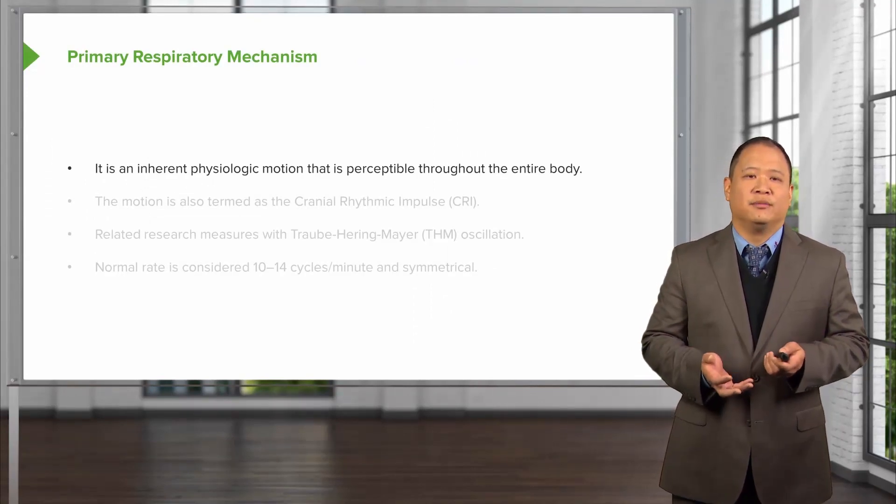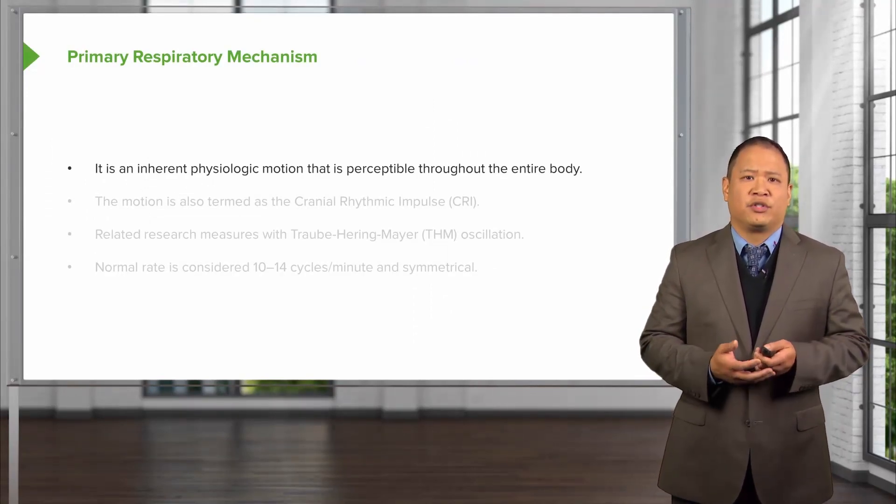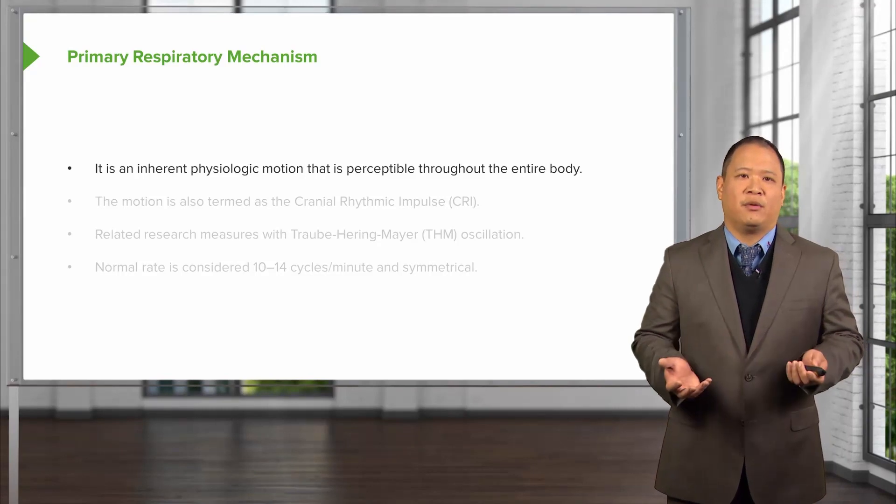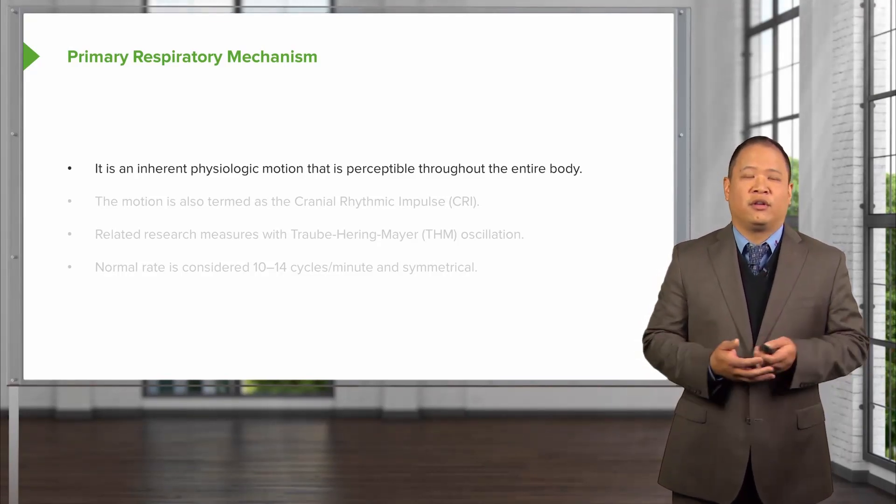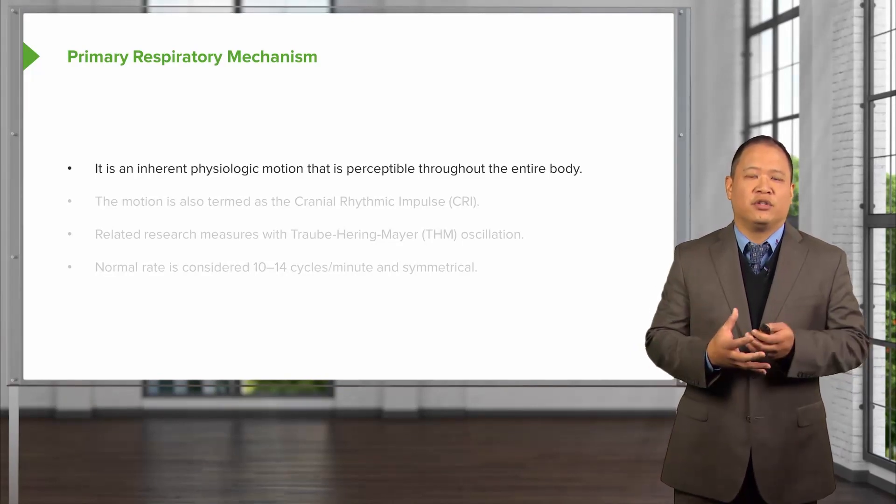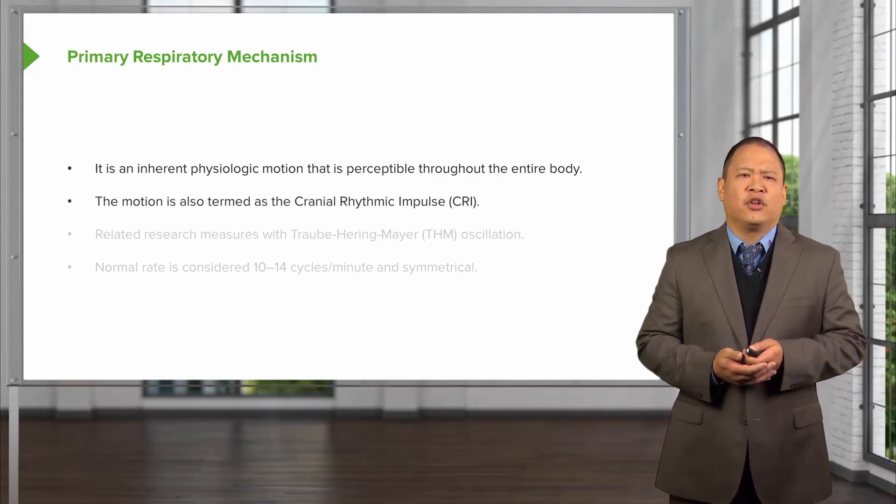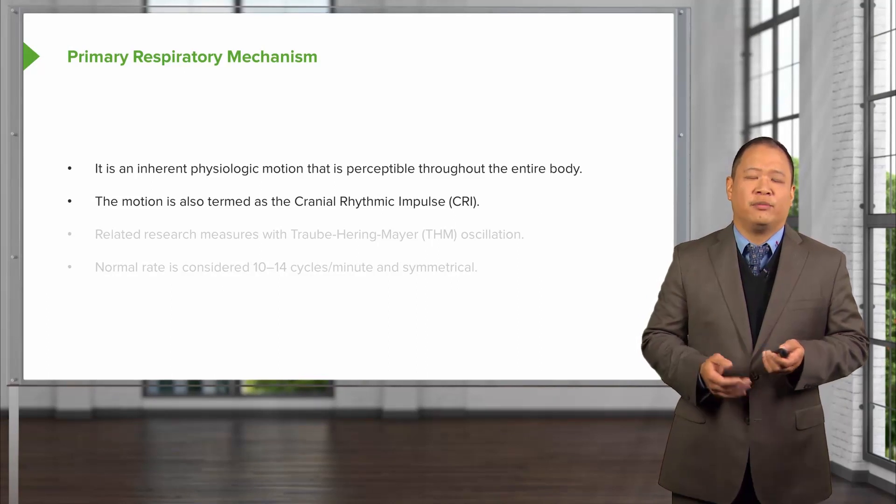The primary respiratory mechanism is an inherent physiologic motion that is perceivable throughout the entire body. This is a motion that is there at birth. There is an expansion and contraction of the central nervous system. Another term for this is the cranial rhythmic impulse.